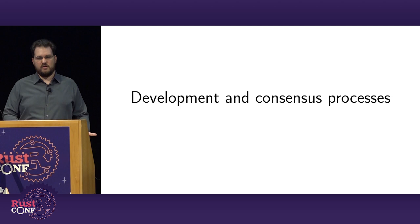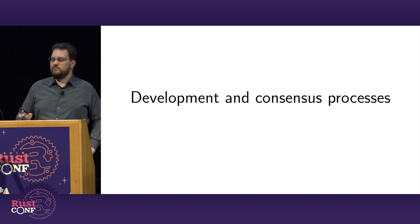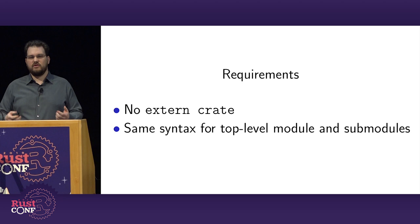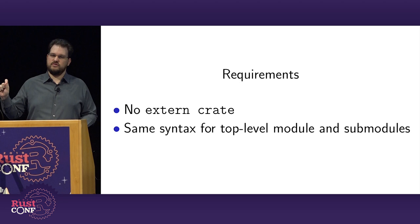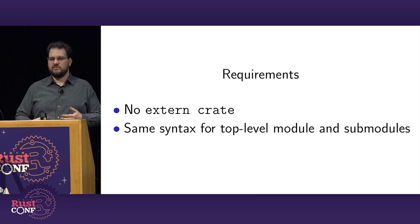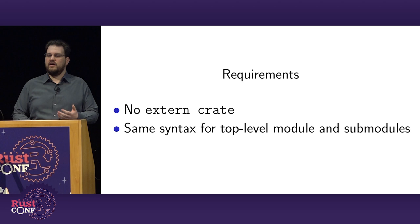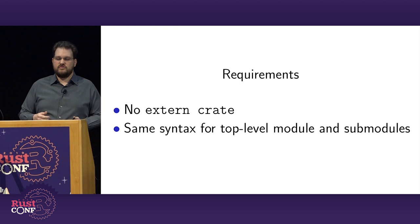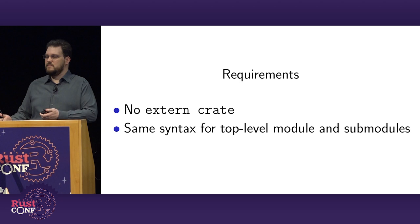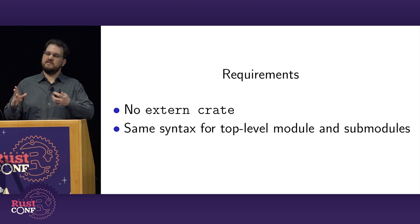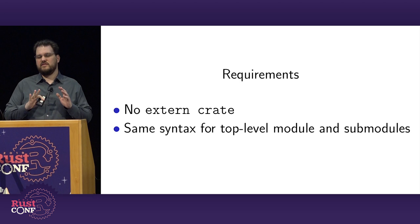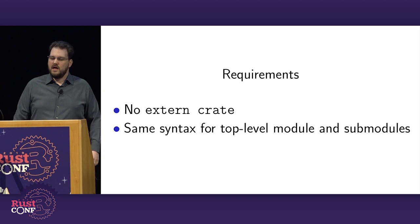This talk is also about development and consensus processes and how we reached the successful module system. Looking at the requirements: first, you shouldn't have to write 'extern crate' — when you define it in cargo.toml and then use it, extern crate just feels redundant, a third place to name it. We also said you should have the same syntax in the top-level module and in submodules — the same syntax whether you're in main.rs or two levels down. This led to very extensive discussion in language team meetings many times over.